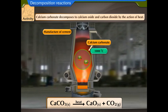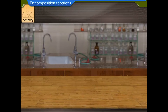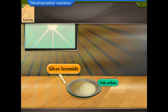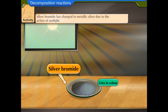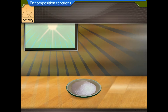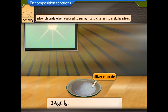Take some silver bromide on a watch glass — it is pale yellow in color. Place the watch glass in sunlight and observe the color after some time. The pale yellow silver bromide has turned gray: silver bromide has changed to metallic silver due to the action of sunlight. Similarly, silver chloride, when exposed to sunlight, also changes to metallic silver.